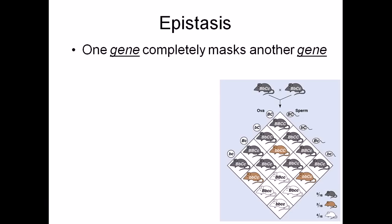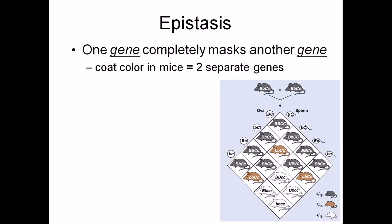Epistasis is a phenomenon where one gene completely masks the effect of another gene. It's like one gene is playing the vital role — a master key role — over any other gene. For example, in mice, coat color is controlled by two separate genes.